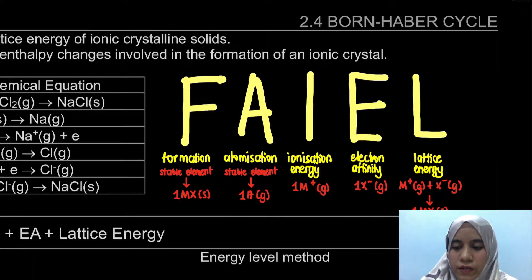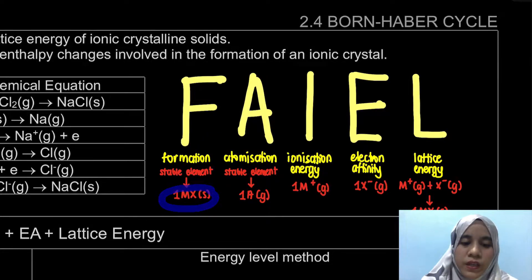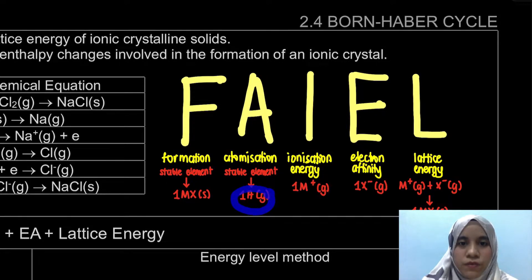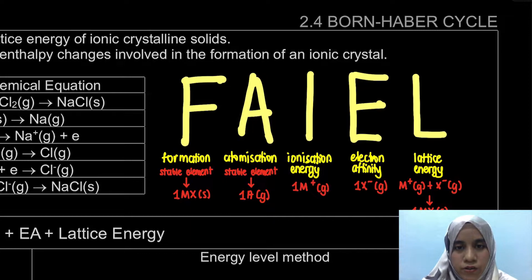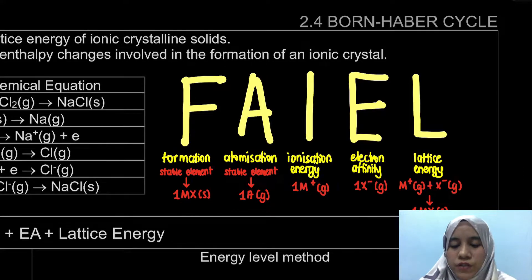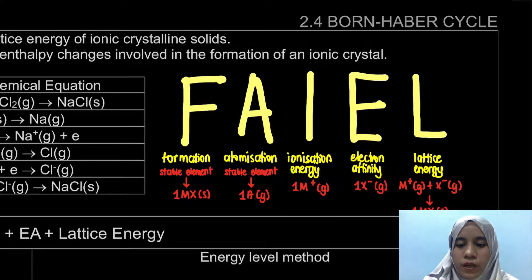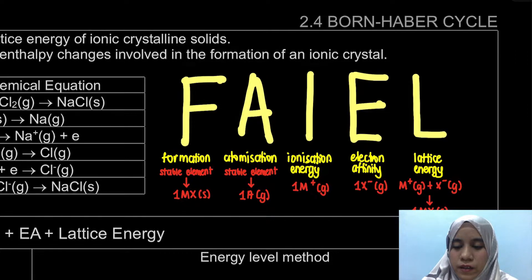For formation, one mole of product is formed from the stable element. Atomization is when one mole of gaseous atom is formed from the stable element. Ionization energy is where the atom donates an electron to form a cation — it must be one mole. Electron affinity is when one mole of gaseous atom accepts an electron to form one mole of anion. Lattice energy is where one mole of solid ionic compound is formed from its gaseous ions.